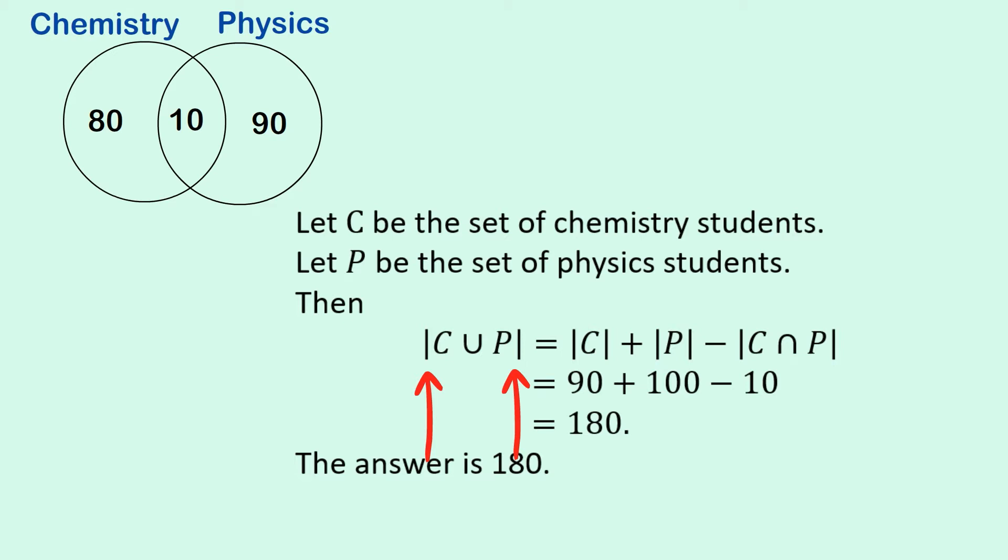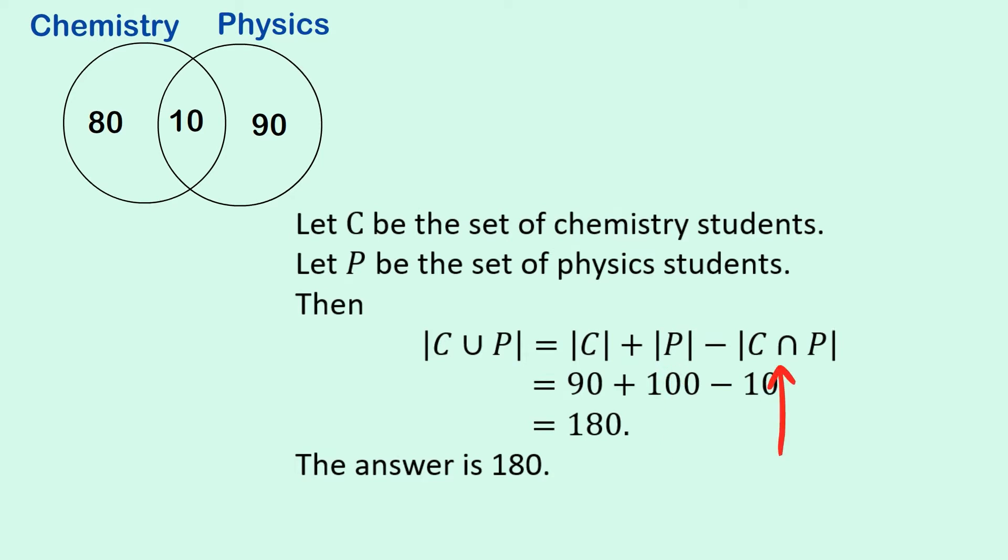So we want the number of elements in the set which is the union of the set of chemistry students and the set of physics students. And the inclusion-exclusion principle gives us a formula for it. It says you add up the cardinality of the set C plus the number of elements in set P, and then you take away the intersection of C and P.